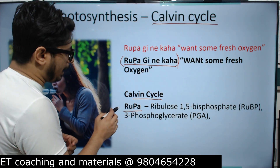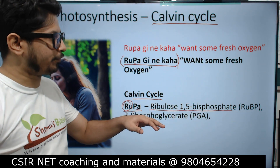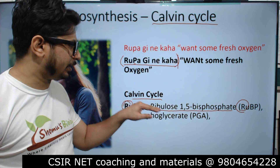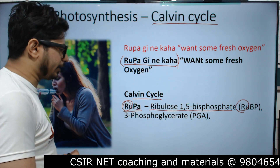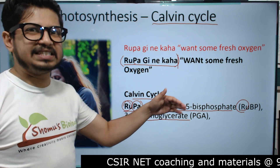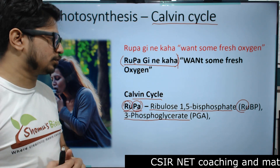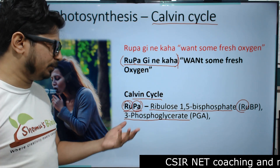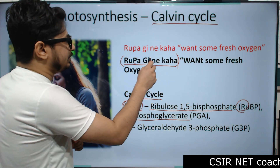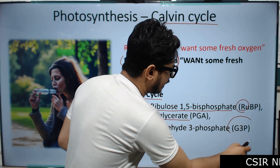Breaking it down: 'RU' in Rupa stands for RuBP — Ribulose 1,5-bisphosphate. 'PA' in Rupa stands for PGA — 3-phosphoglycerate, also called phosphoglyceric acid. Then 'G' in the next part stands for G3P — glyceraldehyde 3-phosphate.